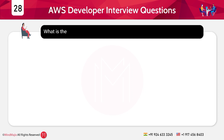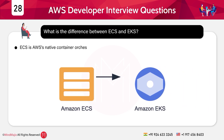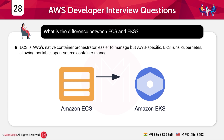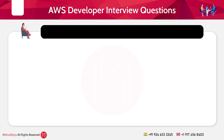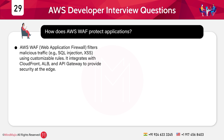Question 28: What is the difference between ECS and EKS? Answer: ECS is AWS's native container orchestrator — easier to manage but AWS-specific. EKS runs Kubernetes, allowing portability and open-source container management, though it requires more setup.